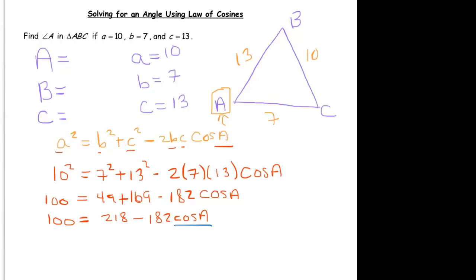A lot of students want to do 218 minus 182. You can't do that. That's violating order of operations. You would never do 218 minus 182x. You would never be tempted to do this subtraction. 218 minus 182x cannot be simplified anymore.